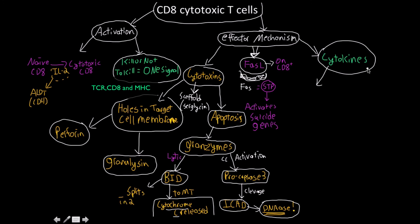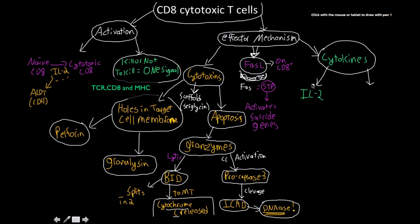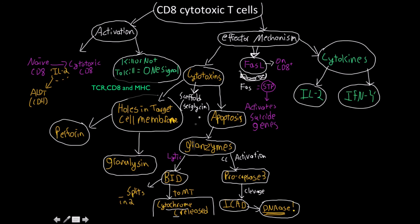The cytokines produced by cytotoxic T cells consist of two main types: interleukin-2 and interferon-gamma. This is more of a secondary function. Interferon-gamma plays a role in attracting macrophages to come in and clean up, because the apoptotic mechanism is designed to produce a very clean corpse with no release of infectious virions or virus particles, keeping the tissue clean.